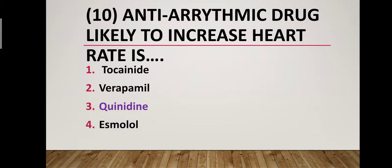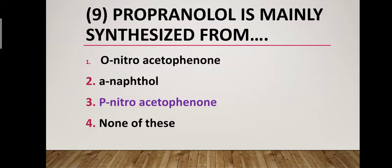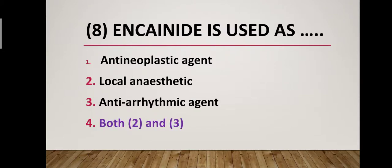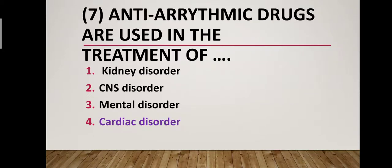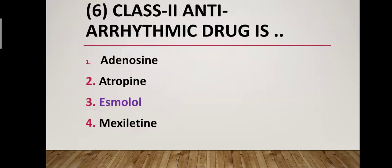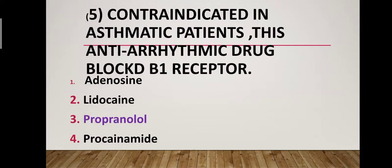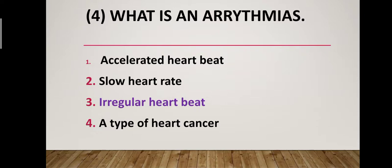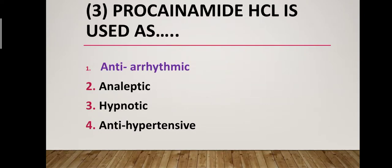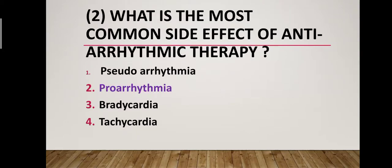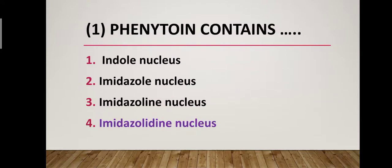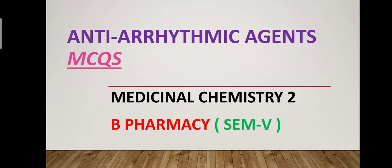Quick recap of all answers: Quinidine increases heart rate. Propranolol is synthesized from para-nitroacetophenone. Encainide is used as a local anesthetic and antiarrhythmic agent. Antiarrhythmic drugs treat cardiac disorder. Class 2 antiarrhythmic drug is esmolol. Propranolol, which blocks beta-1 receptors, is contraindicated in asthmatic patients. Arrhythmia means irregular heartbeat. Procainamide HCl is an antiarrhythmic drug. Proarrhythmia is the most common side effect. Phenytoin contains an imidazolidine nucleus.